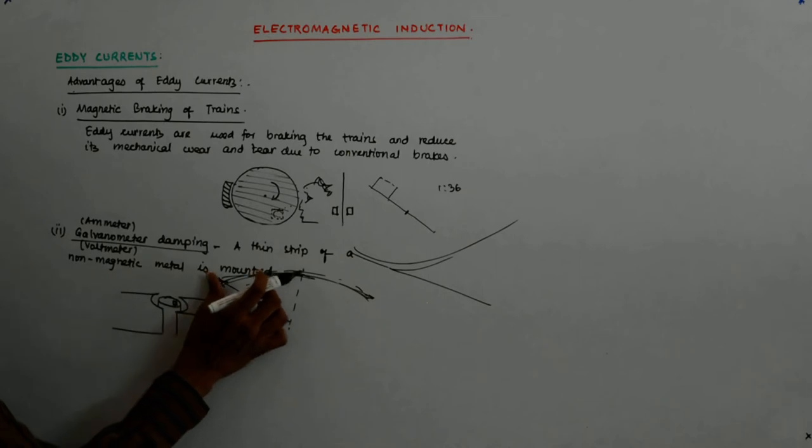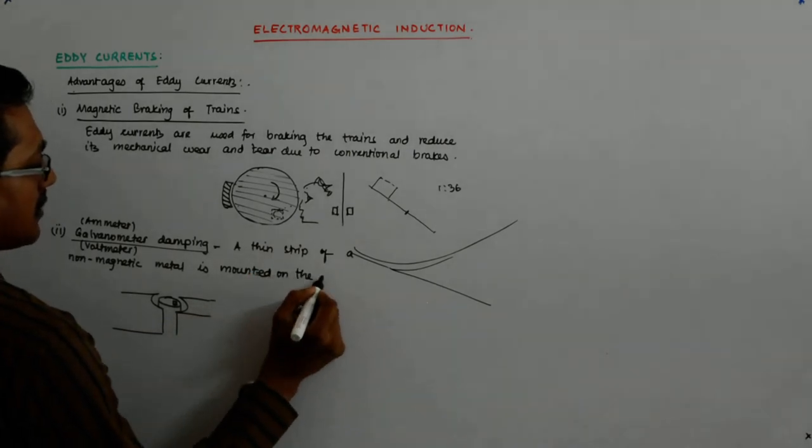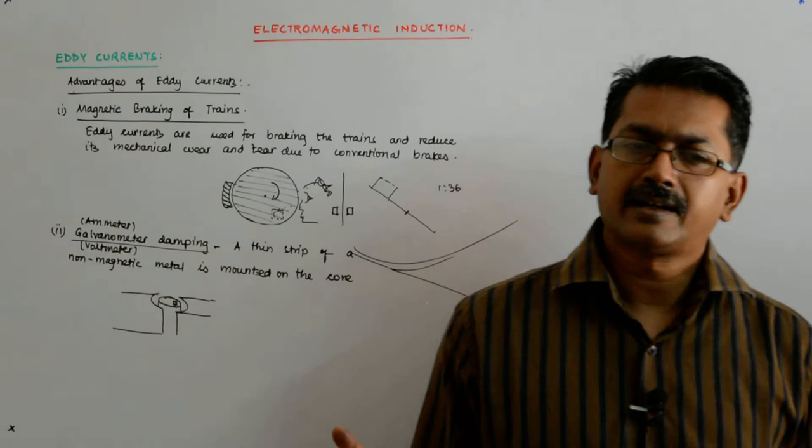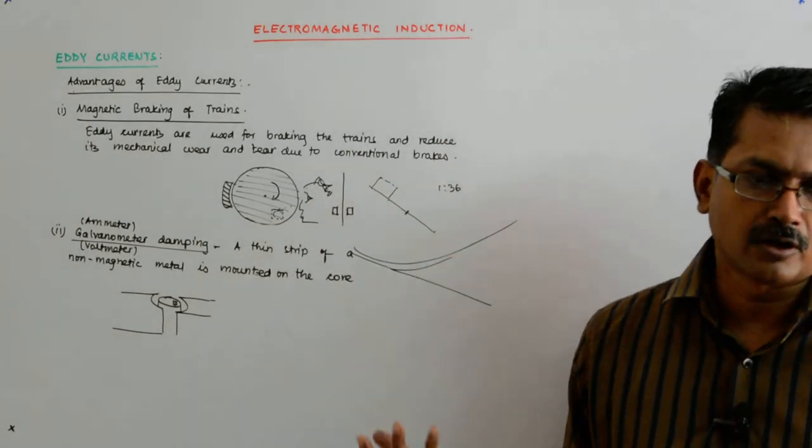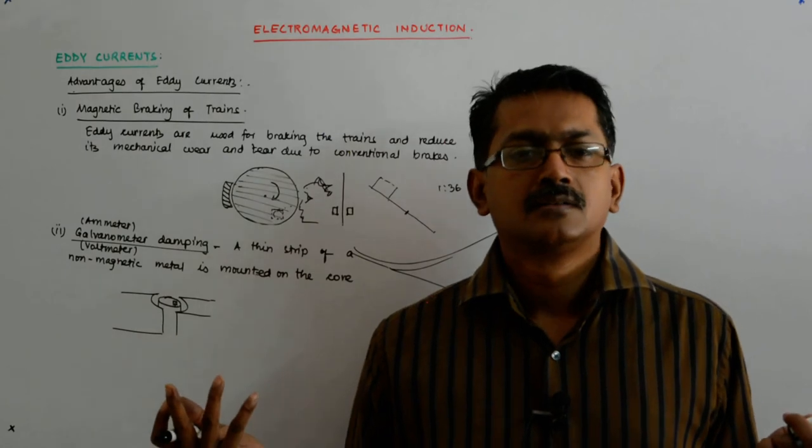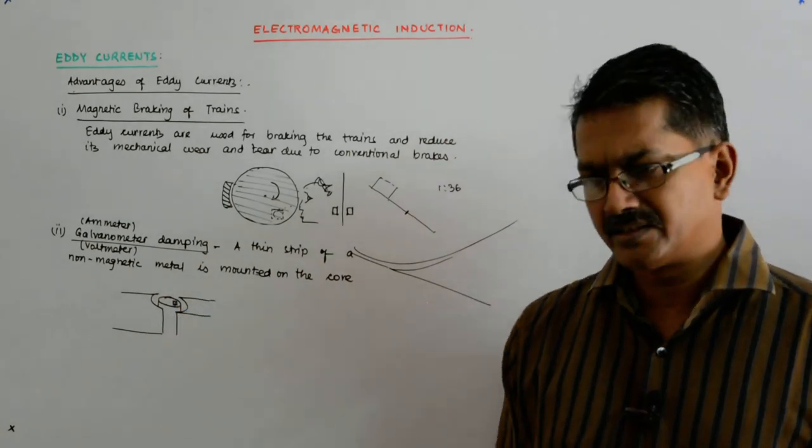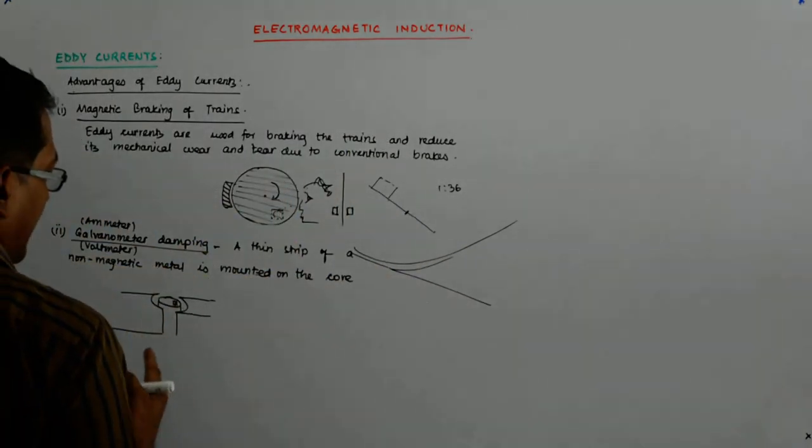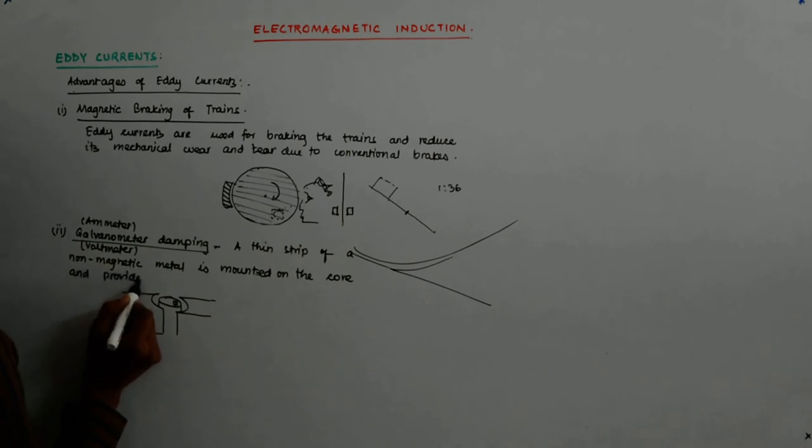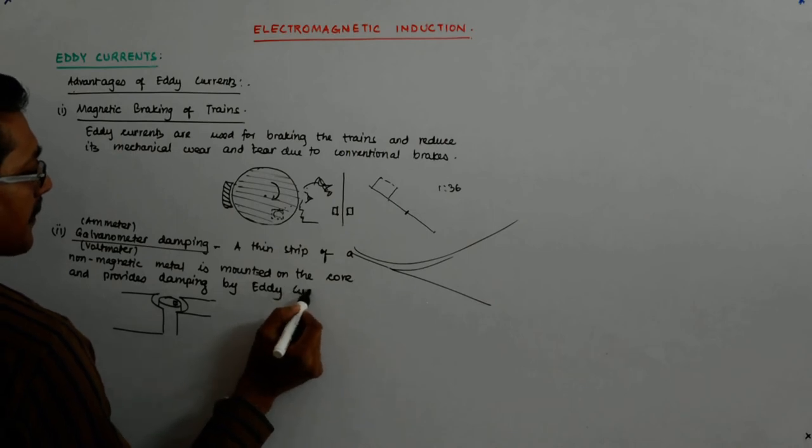So a thin strip of a non-magnetic metal. Why non-magnetic? Because see, the magnetic material has got its own way of reacting. It might after some time become a permanent magnet and start interfering with the whole thing. So I do not want it to be a magnetic thing - it may get permanently magnetized and it may start interfering with my readings. And that is bound to happen since it is there an integral part of it and it will continue there for next 20 years. So we do not want it to be magnetized as well. So it is mounted on the core and provides damping by eddy currents.